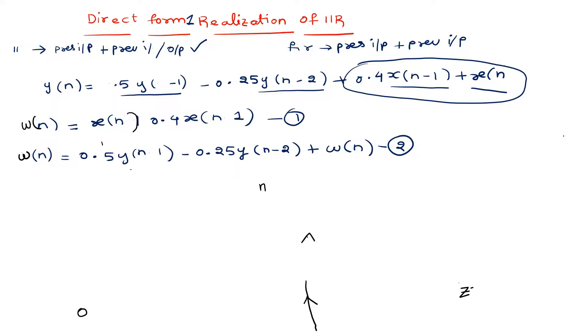So x(n) - let me draw a line here. x(n) goes to ω(n), which is the intermediate variable, and y(n) is my output.